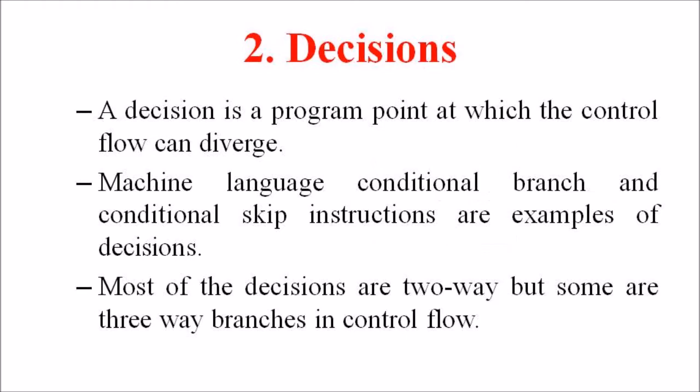The second one is the decision. A decision is a program point at which the control flow can diverge. The machine language conditional branches and conditional skip instructions are examples of decisions.